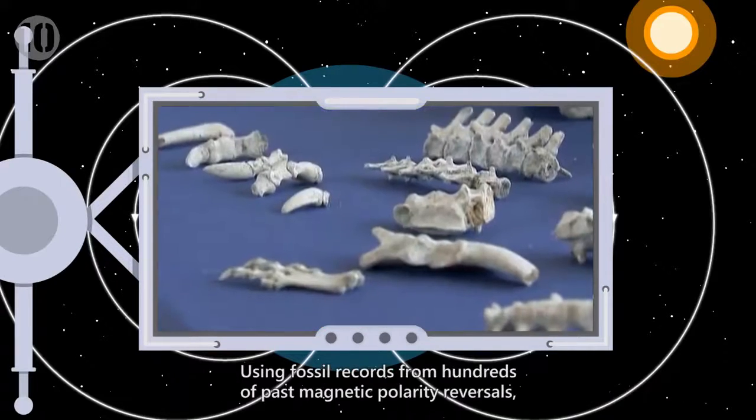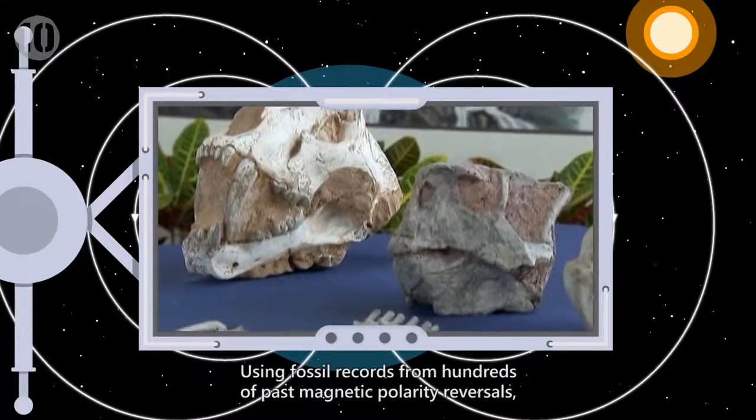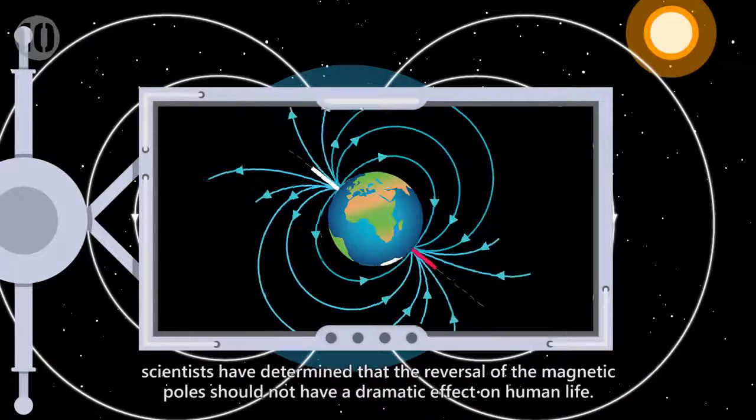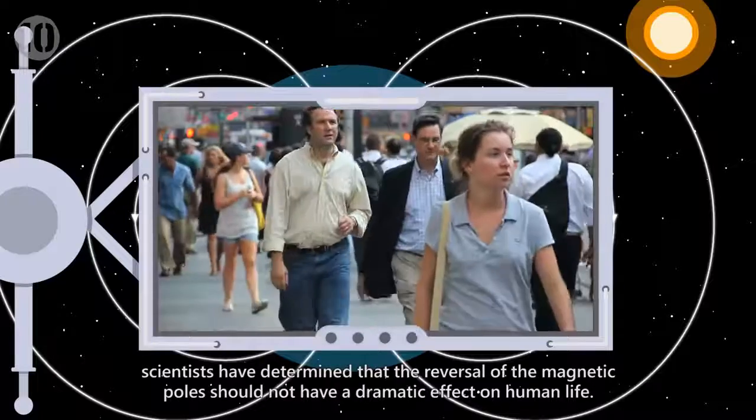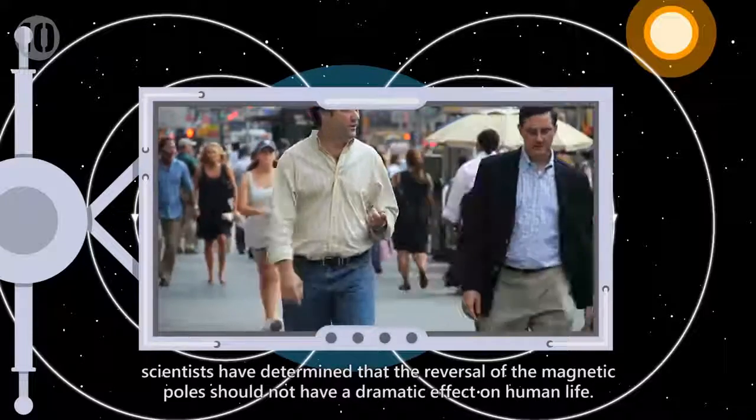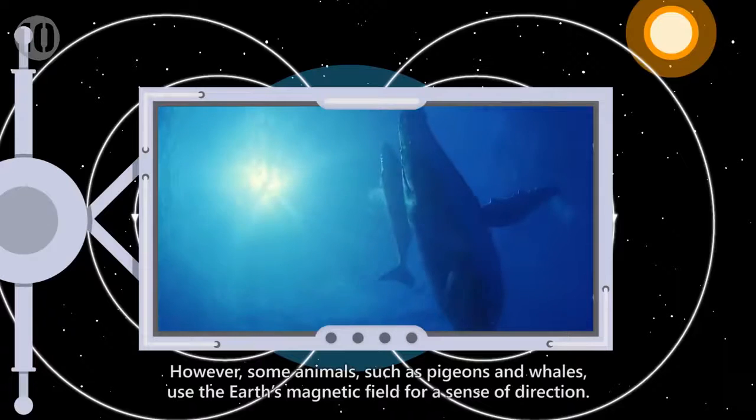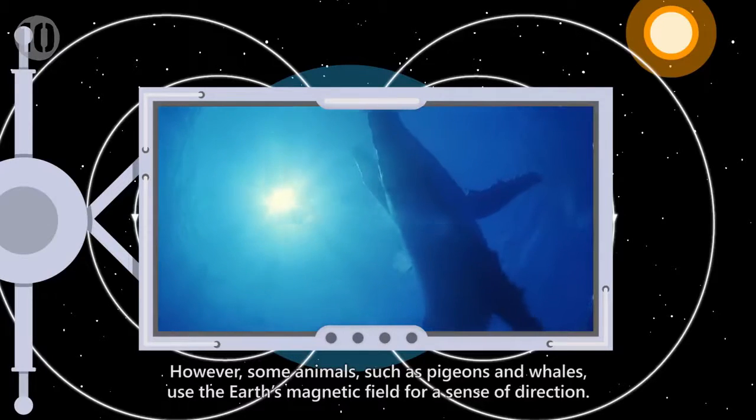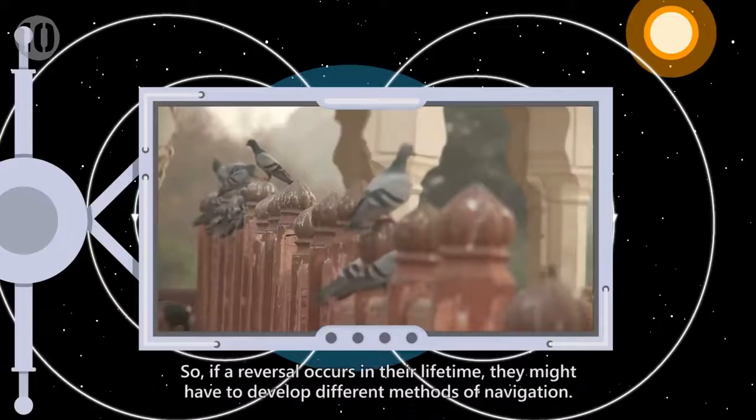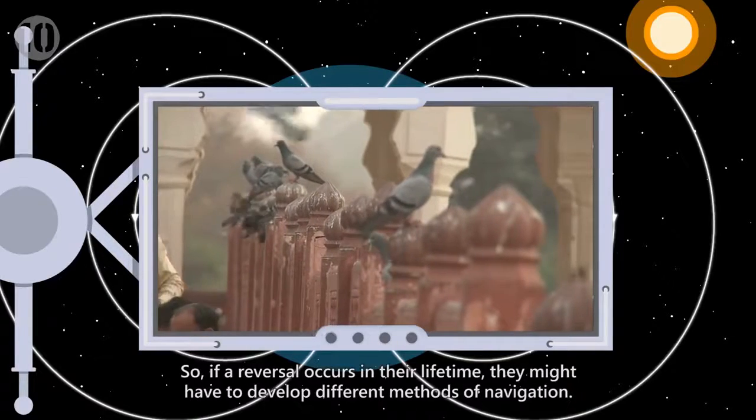Using fossil records from hundreds of past magnetic polarity reversals, scientists have determined that the reversal of the magnetic poles should not have a dramatic effect on human life. However, some animals, such as pigeons and whales, use the Earth's magnetic field for a sense of direction, so if a reversal occurs in their lifetime, they might have to develop different methods of navigation.